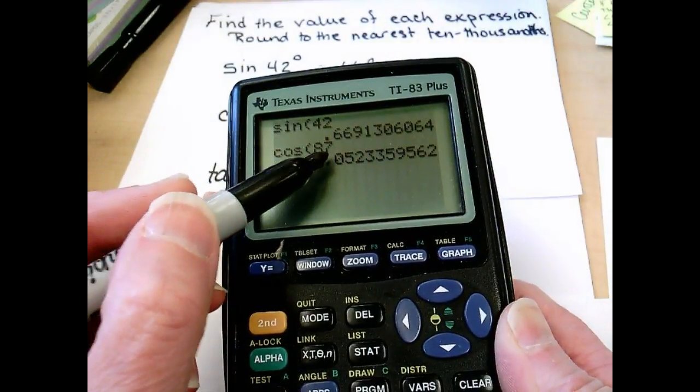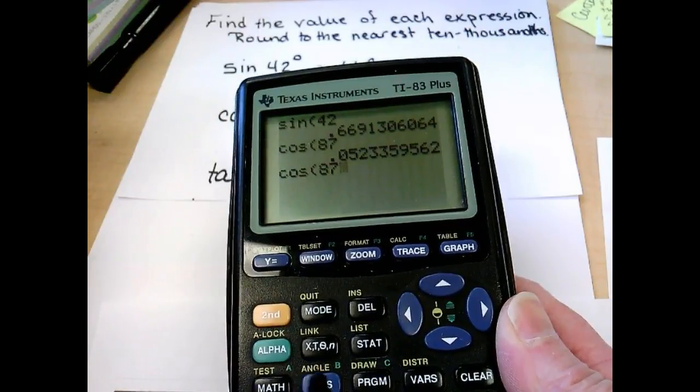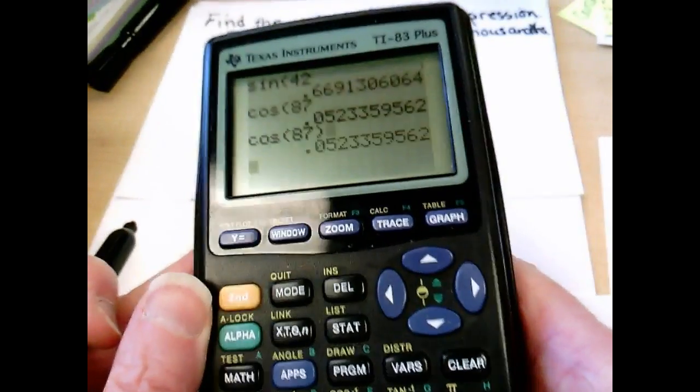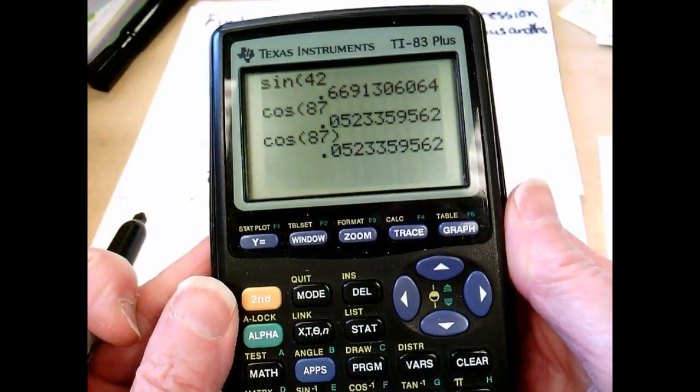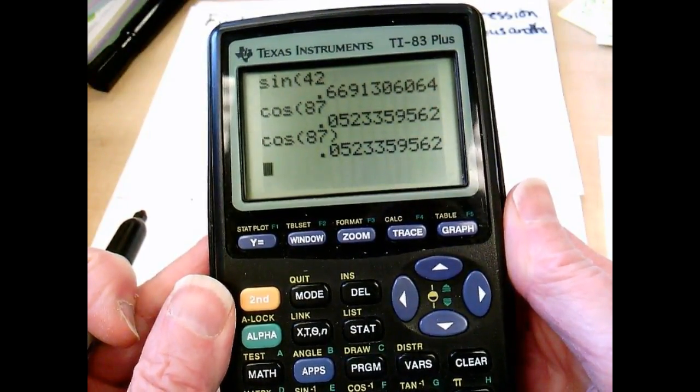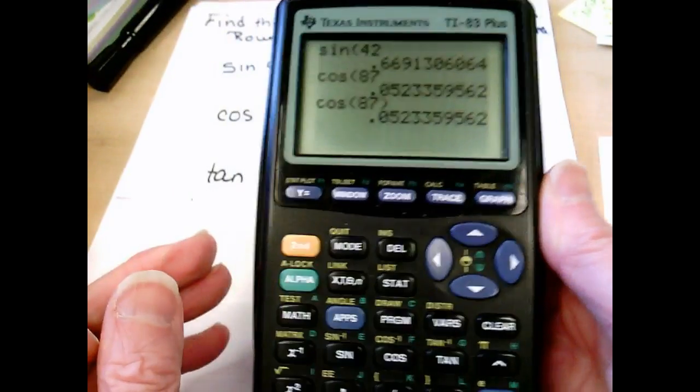As you notice here, I'm not bothering in putting cosine 87 in the other parenthesis, because it will give me exactly the same number every time. So I don't need to put that in. If it's in an equation where we have more to do, you might need to put that parenthesis in there.